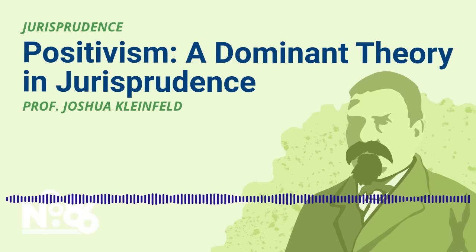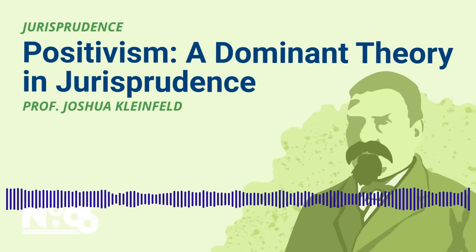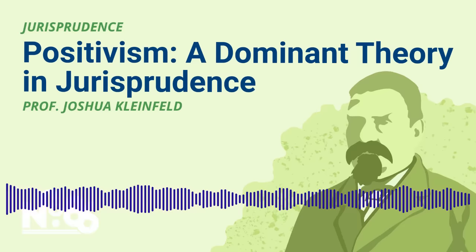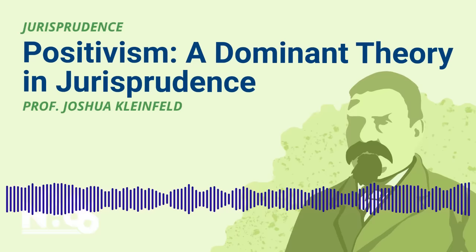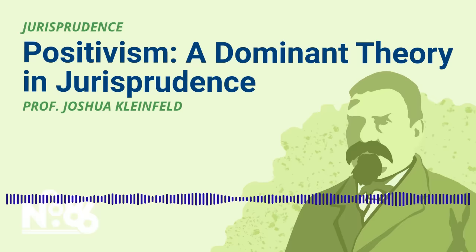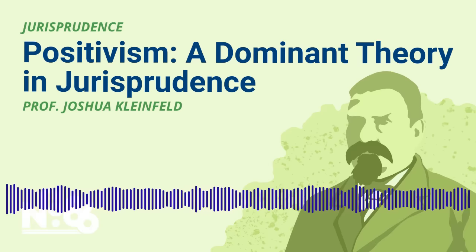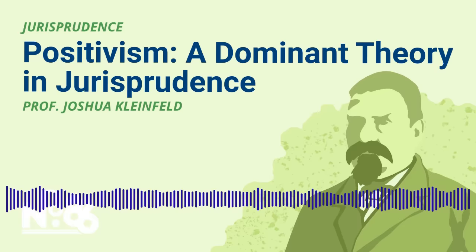What is positivism? Where did it come from? Positivism became dominant in English-speaking countries with Austin's book, The Province of Jurisprudence Determined. Its basic take on law is twofold: the separation thesis — the idea that there is no necessary connection between law and morality, between what the law is and what it ought to be — and what Austin called command theory. Command theory was the idea that what a law basically is, is a command of the sovereign backed by sanctions.